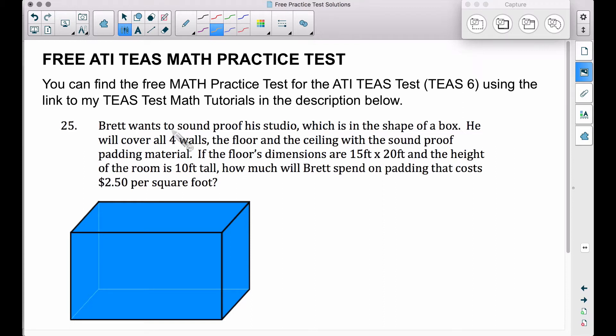Number 25: Brett wants to soundproof his studio, which is in the shape of a box. He will cover all four walls, the floor, and the ceiling with soundproof padding material. If the floor's dimensions are 15 feet by 20 feet and the height of the room is 10 feet tall, how much will Brett spend on padding that costs $2.50 per square foot?